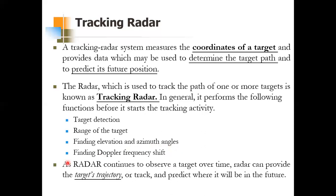The radar should always continue to observe the target over time, keeping track of it so that it gets the target's trajectory and can predict its future position. This is what a basic tracking radar should do.